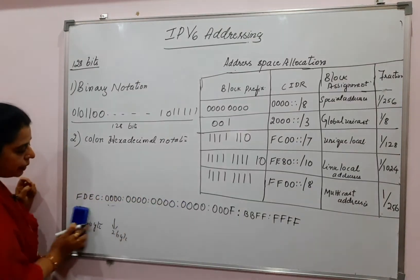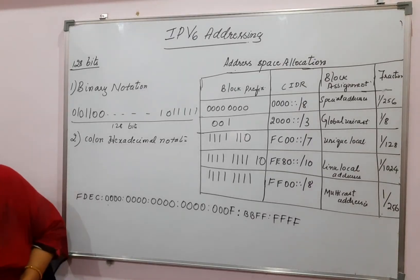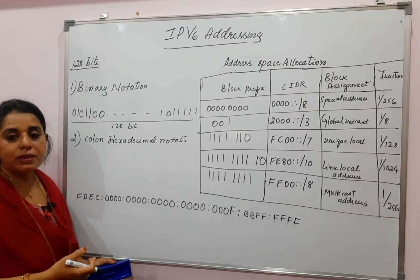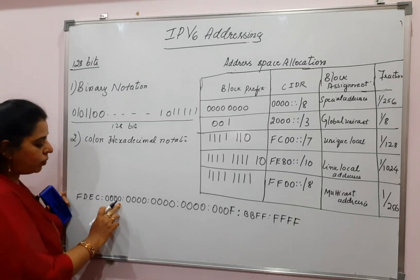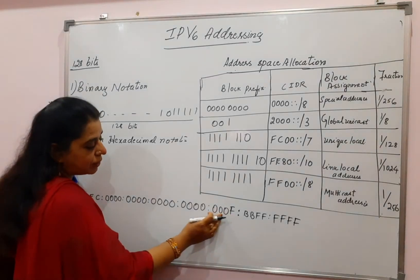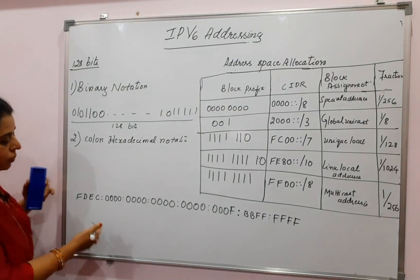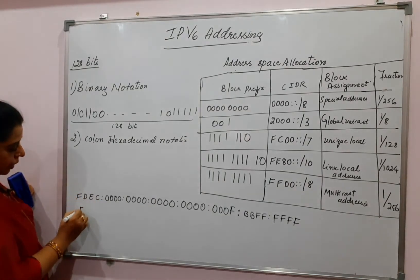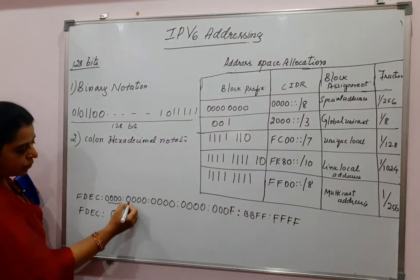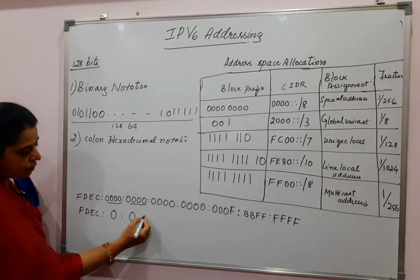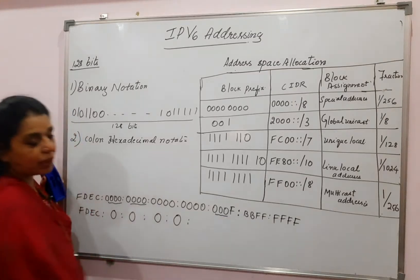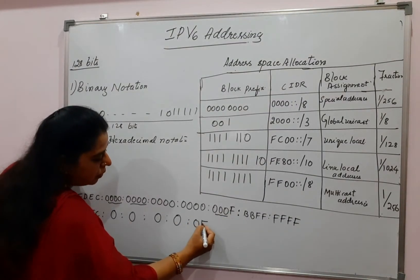The hexadecimal notation can also be quite lengthy, so we can compress it using certain rules. If any particular section has consecutive zeros, you can reduce it to one single zero. If a section has leading zeros, you can reduce those to one zero. For example, you can write 'fdec', and for sections of all four zeros, write just a single zero, continuing through the address, compressing '000f' to just '0f'.